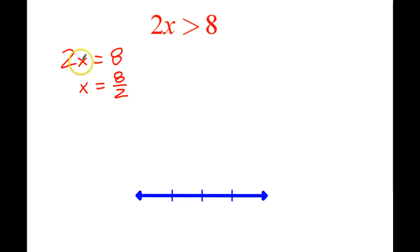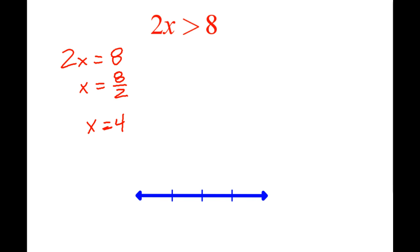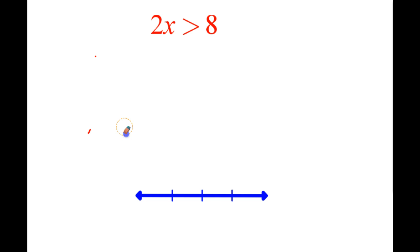Think of it as: I start with x, some number, and I get to 8 by multiplying by 2. I can take 8 and divide it by 2, and I know that x is going to be equal to 4. Well, in this case it's not an equation, it's an inequality. So on this side what I'm saying is the left side here is bigger than the right side. So 2 times some number is going to be more than 8.